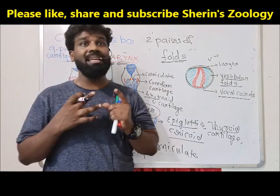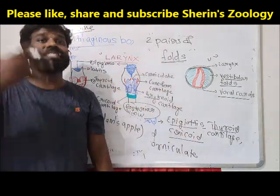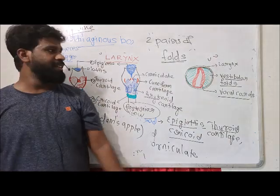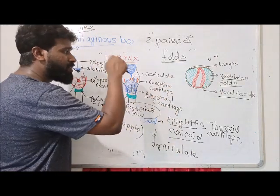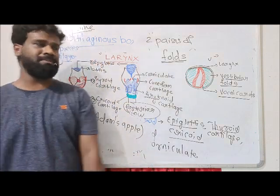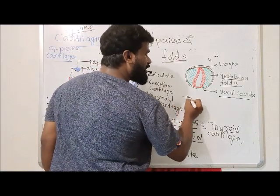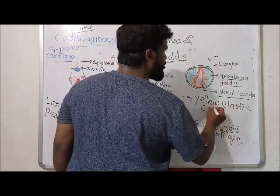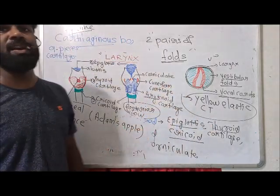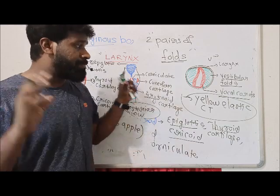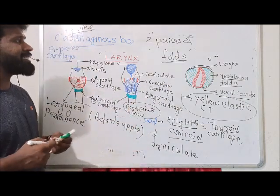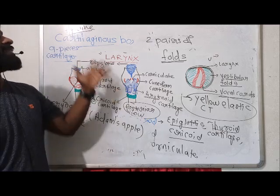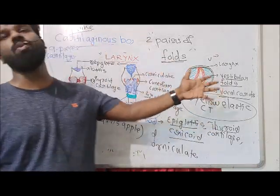Vibrations of the vocal cords during exhalation produce different types of phonation and voice in man. The vocal cords are found inside the larynx, hence the larynx is called the voice box or sound box. The vocal cords are predominantly composed of yellow elastic connective tissue, in addition to squamous epithelium and smooth muscles.